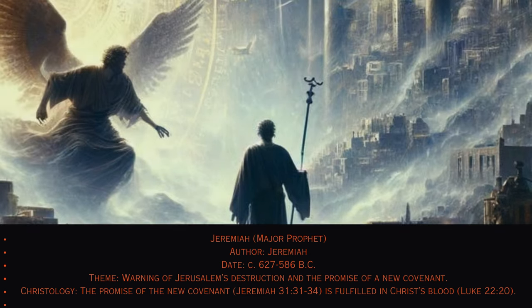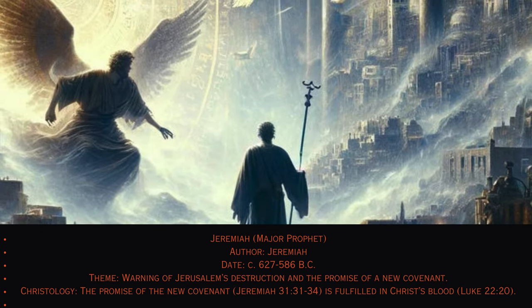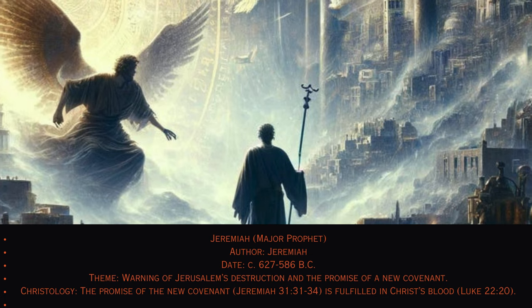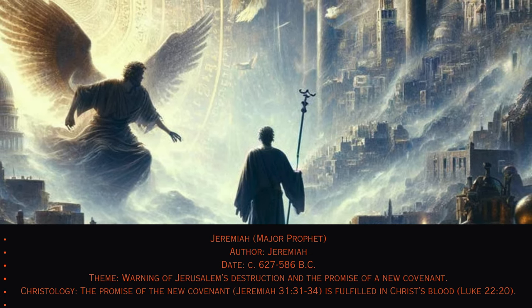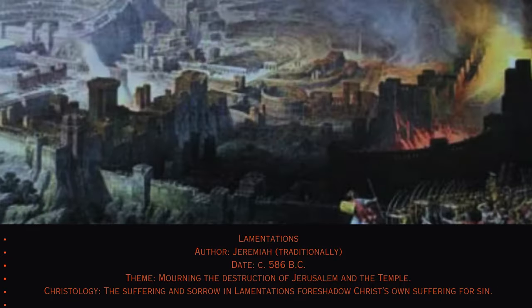24. Jeremiah. Major prophet. Author: Jeremiah, circa 627–586 B.C. Theme: Warning of Jerusalem's destruction and the promise of a new covenant. Christology: The promise of the new covenant (Jeremiah 31:31–34) is fulfilled in Christ's blood (Luke 22:20).